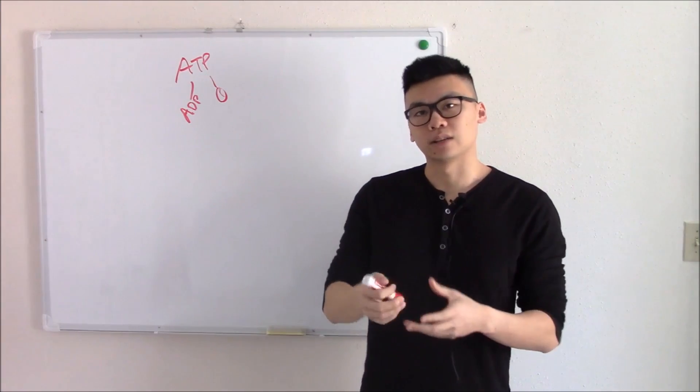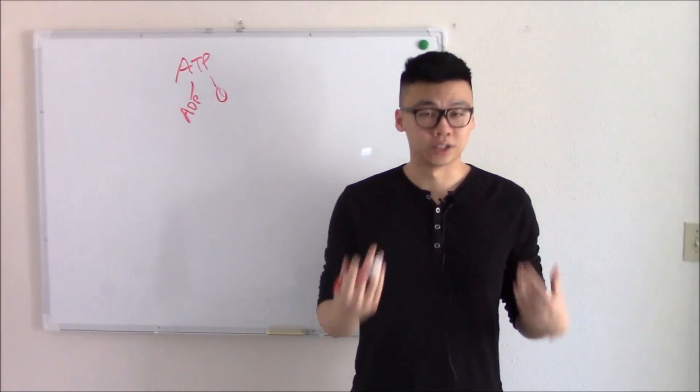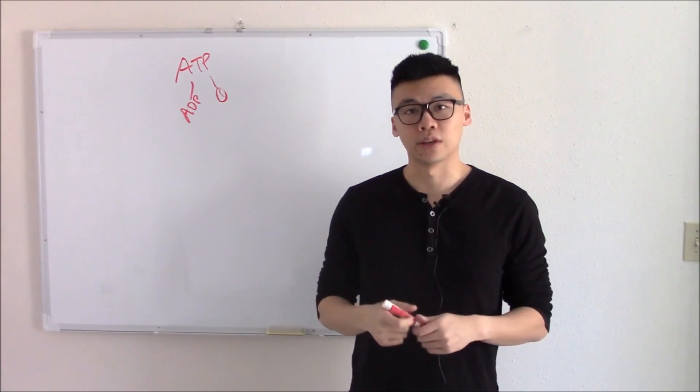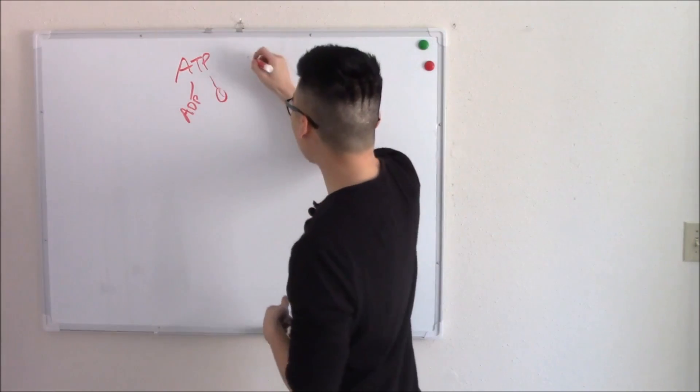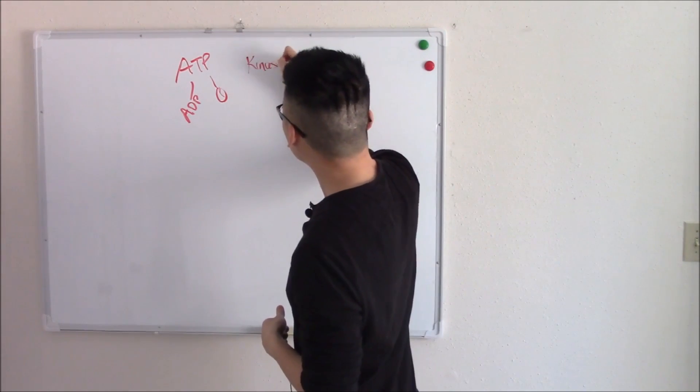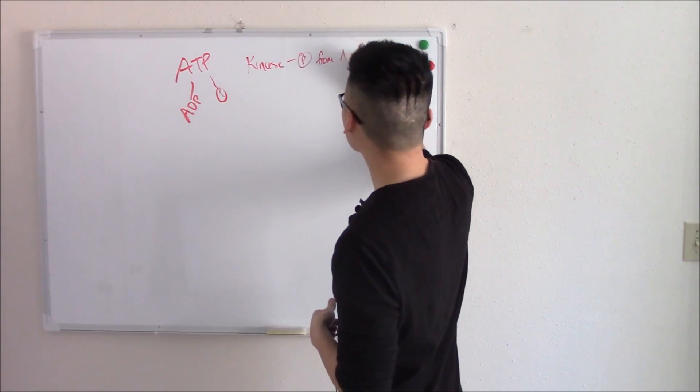Moving that phosphate group off releases a lot of energy, powers what it needs to power, and moving phosphate groups around in general is a very important thing we do. And there are a lot of enzymes that do just that. So kinases move phosphate groups around from ATP sources.